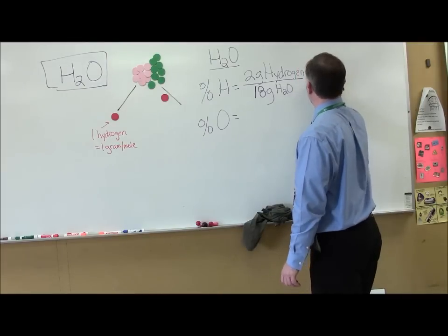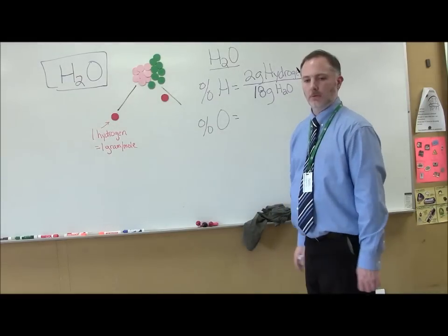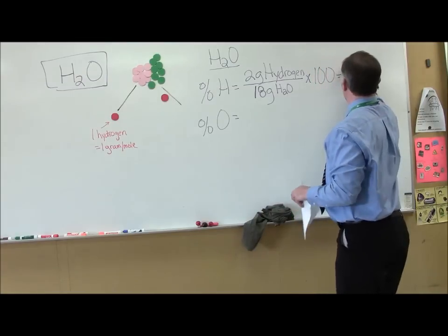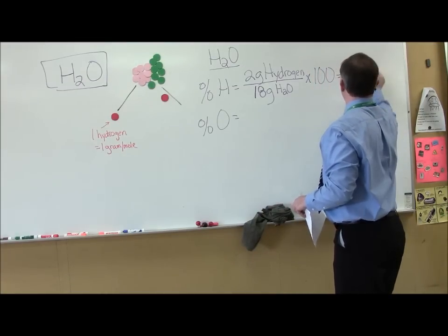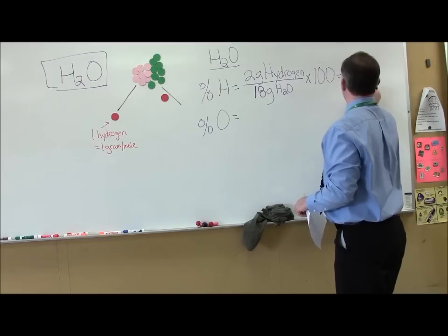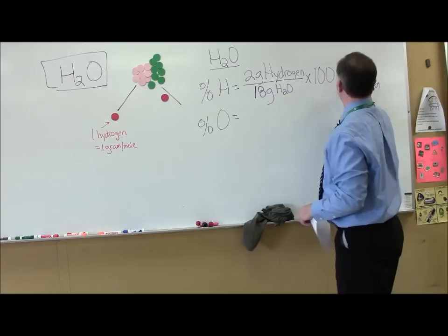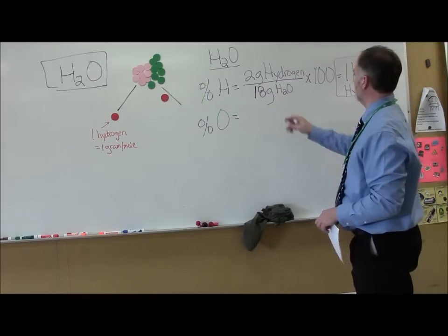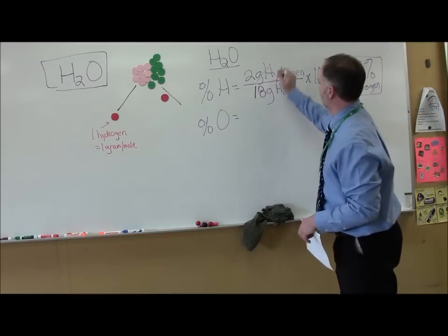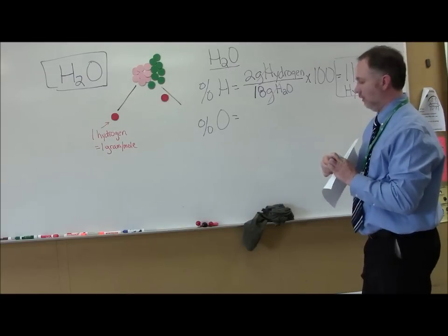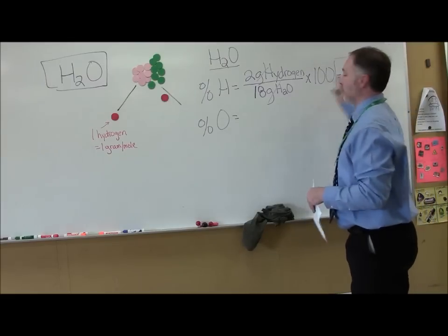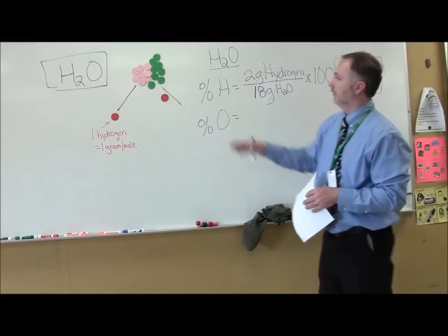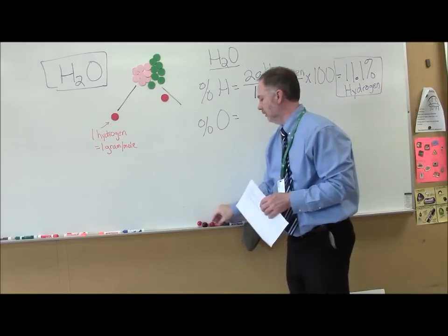And then you multiply that by 100. So you do this. Let me check my answer here. I ended up with 11.1% hydrogen. 2 divided by 18 times 100. And here's the thing, my grams cancel out. Now that's how much hydrogen, how much water is actually, sorry let me rephrase that. How much hydrogen there is by mass in a molecule.